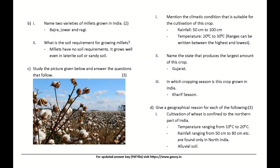Study the picture and answer the questions: Mention the climatic condition suitable for the cultivation of this crop — rainfall 50 cm to 100 cm, temperature 20°C to 30°C. Name the state that produces the largest amount of this crop — Gujarat. In which cropping season is this crop grown in India? Answer: Kharif season.